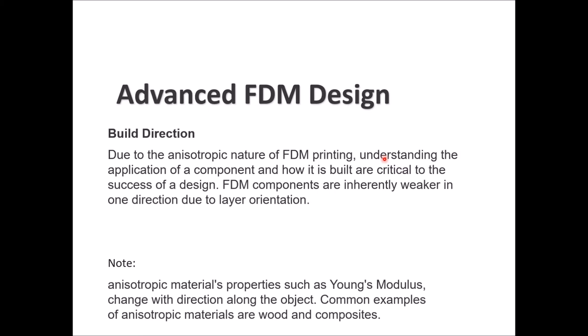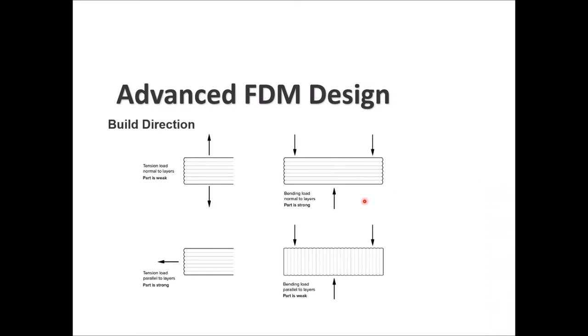FDM is an anisotropic process, meaning material properties change with direction along the object. You need to understand the application and how the component is built. FDM components are usually weaker in one direction due to layer orientation. For example, if layers are built bottom-up and a tension load is perpendicular to the layers, the part is weak. If the tension load is perpendicular to the build direction of the layers, the part will be strong.